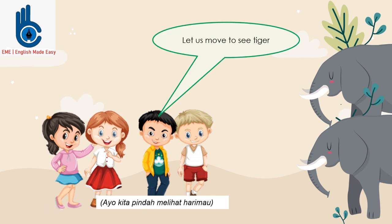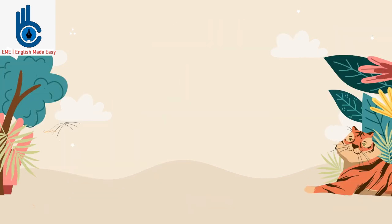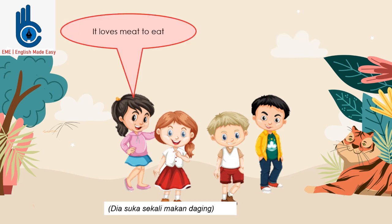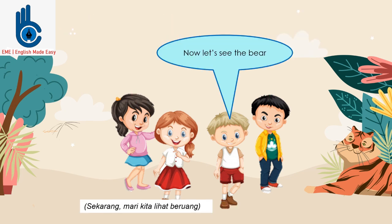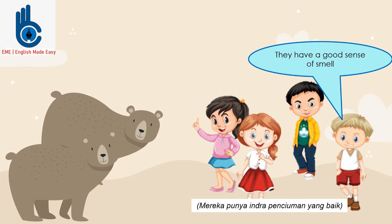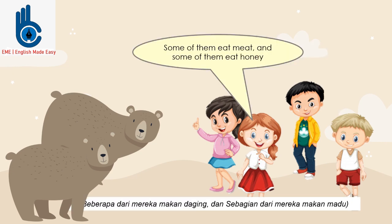Let us move to see the tiger. Tiger has a striped coat to give it good camouflage when it hunts. It loves meat to eat. Now let's see the bear. Bears have thick fur coats to protect them from the cold. They have a good sense of smell. Some of them eat meat, and some of them eat honey.